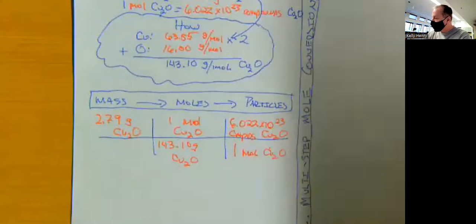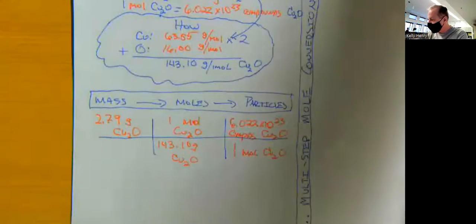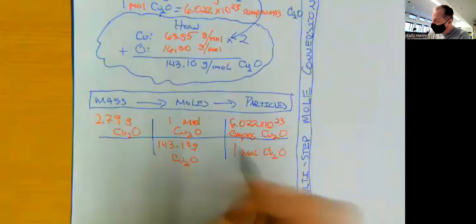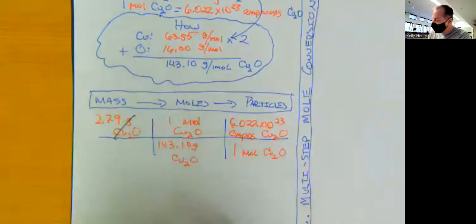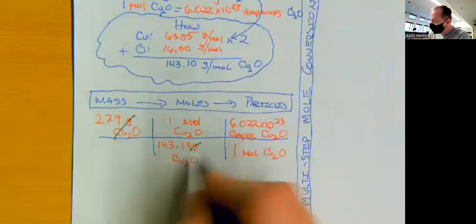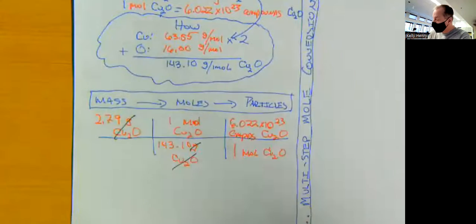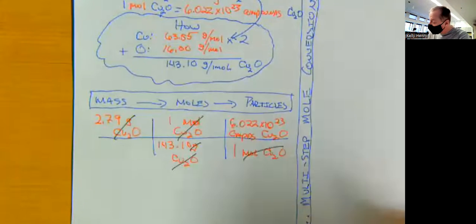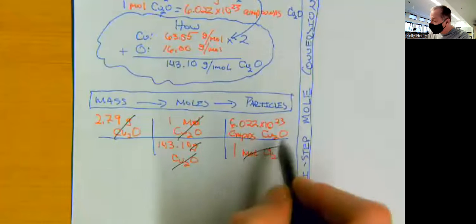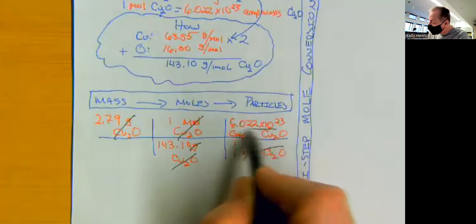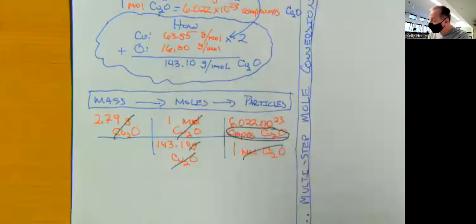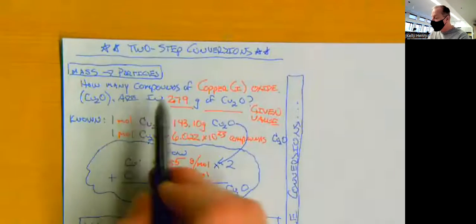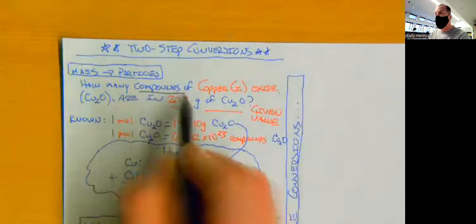So now, when we multiply that out, we'll see that our grams of copper one oxide cancel out. That leaves us with moles. And then our moles of copper one oxide will cancel out. And that leaves us with the number of compounds of copper one oxide, which is what our question originally asked us to solve for. How many compounds?